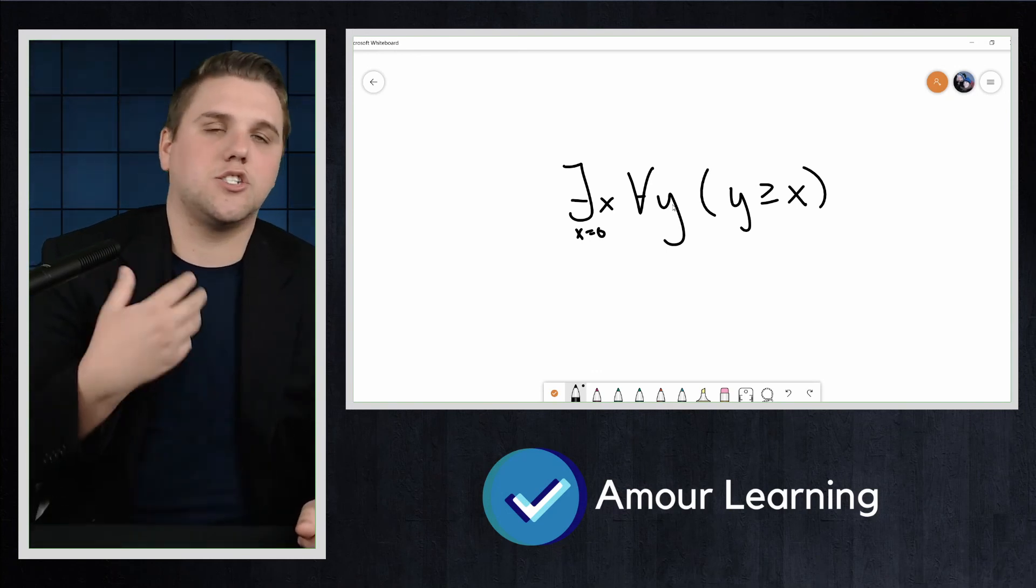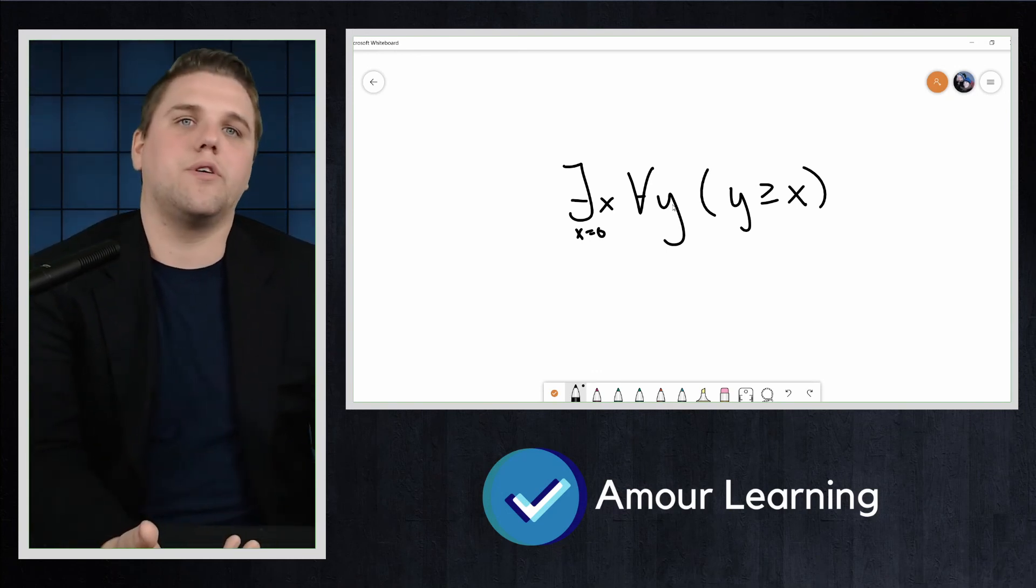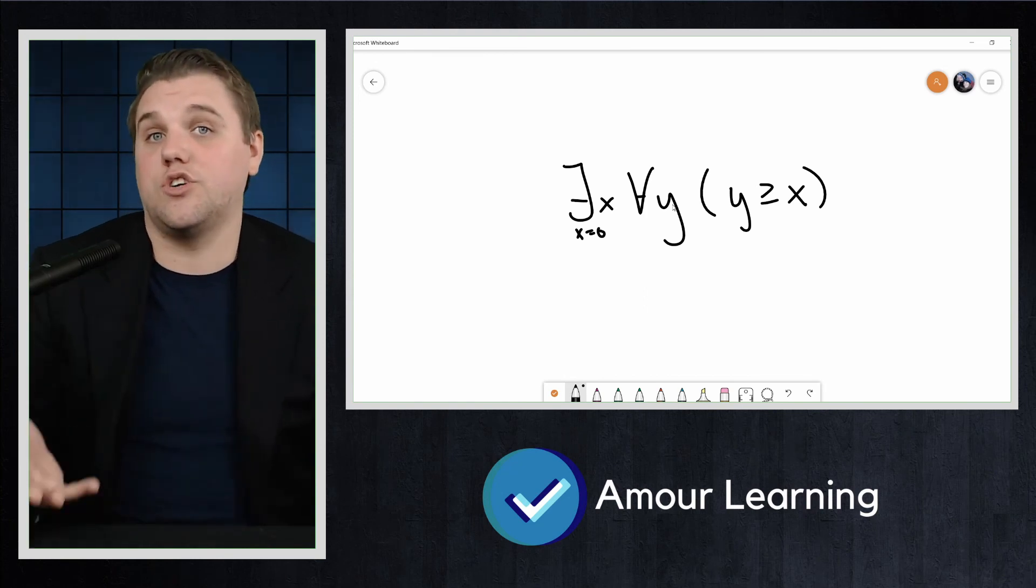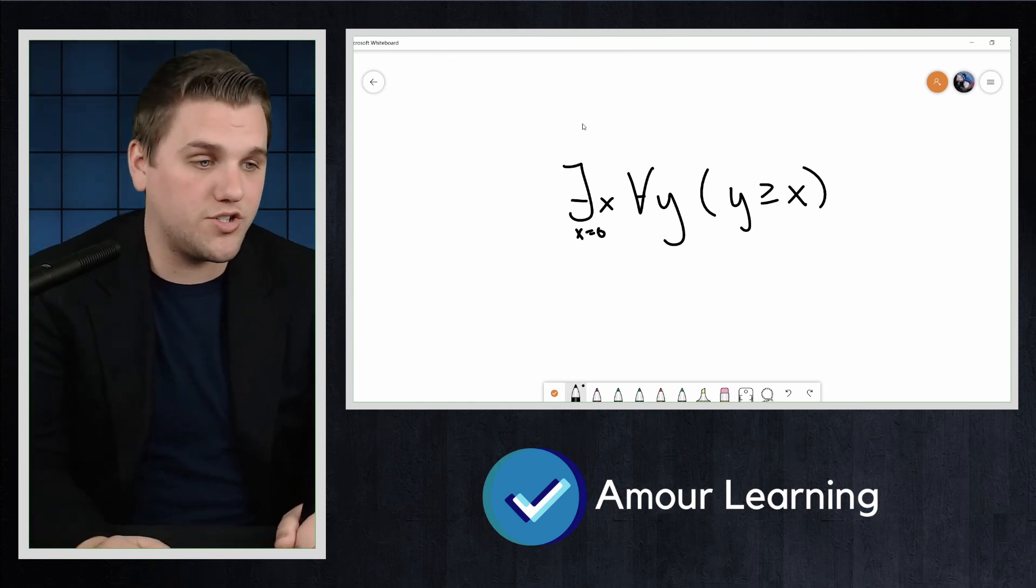which is true in the natural numbers. 0 is, in fact, the smallest element in the natural numbers. So notice how the negation and the original statement compare. I'll draw the original statement.